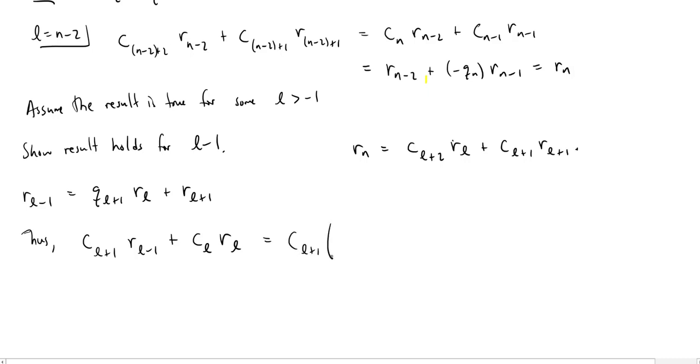So we have C L plus 1 times Q L plus 1 times R L plus R L plus 1. Plus, now I have this C sub L, and we have a recurrence relation for C sub L. We know what C sub L is going to equal. This is going to equal C L plus 2 minus Q L plus 1 times C L plus 1. So this is where you multiply the previous term times the quotient and then add the double previous term. And that'll all be multiplied by R sub L.